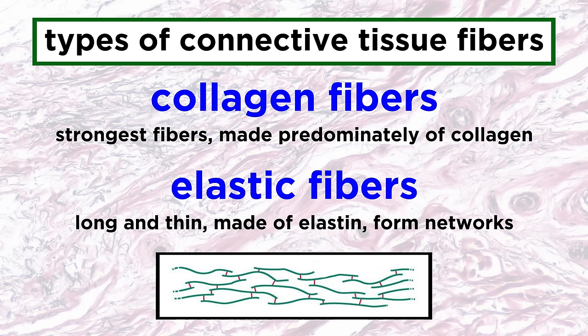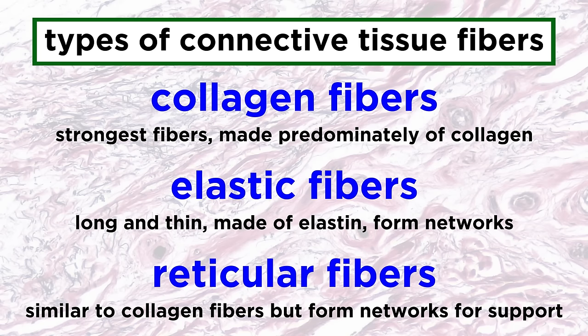Then there are elastic fibers. These are long and thin, made of a stretchy protein called elastin, and they form networks within the extracellular matrix. Lastly, there are reticular fibers. These are similar to collagen fibers, but they form networks supporting other types of tissue.